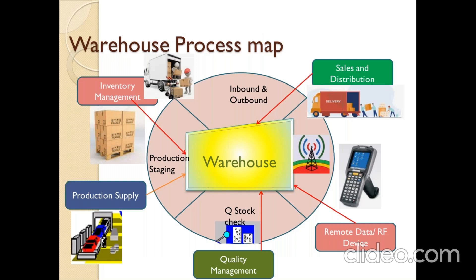Coming to the next slide — the warehouse process map, showing how warehouse supports other SAP modules. This is a standard SAP flowchart. One point I missed earlier: in SAP WM we can make it a standalone system — if your organization uses Oracle, Microsoft Dynamics, or another ERP tool but is only interested in SAP WM, it can work as a standalone system. That is also a possibility.